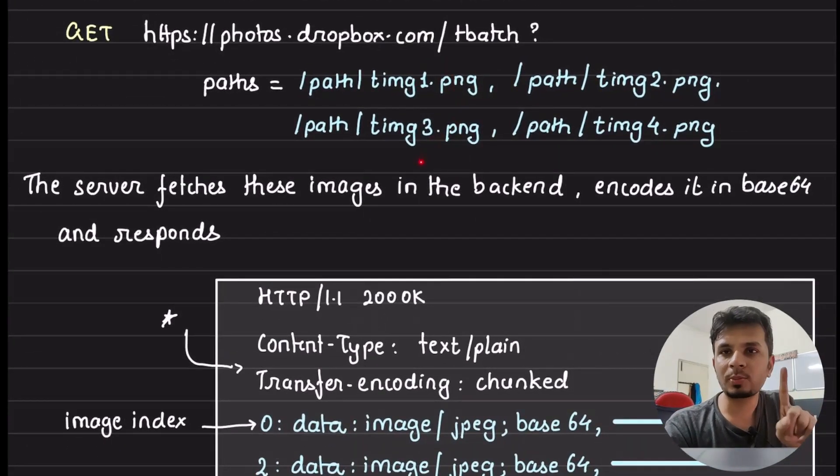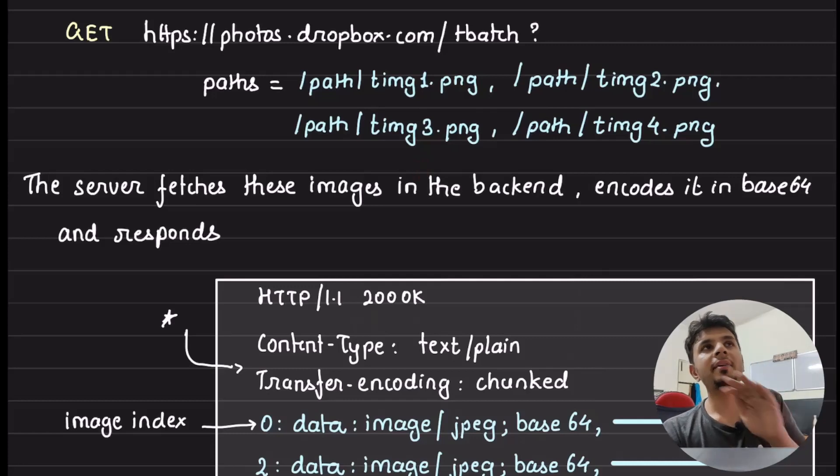But how does it do that? First of all, thumbnails are small. And when we are transmitting the image, we can transmit the image in base64 encoded form. So, it's actually binary data, but the encoding that you are using is base64 encoded, which means it makes it safer for us to transmit it in HTTP response, use it as a string if we would want to.